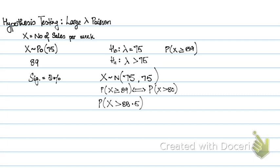this becomes P(X > 88.5). So 88.5 is basically my observed value when I approximate the Poisson to a normal.